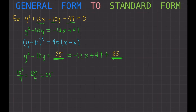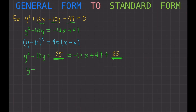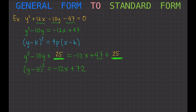We now have a perfect square trinomial on the left, which we can write as y minus 5 squared. You can verify that these two expressions are the same. The right-hand side becomes minus 12x plus 47 plus 25, which gives us plus 72.